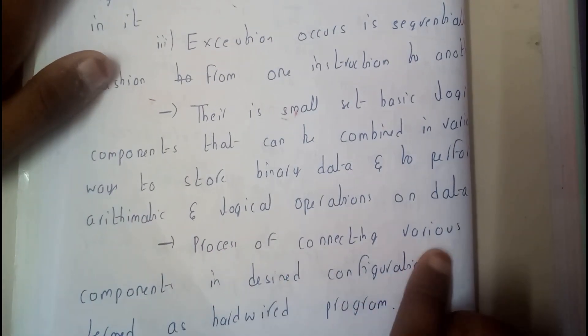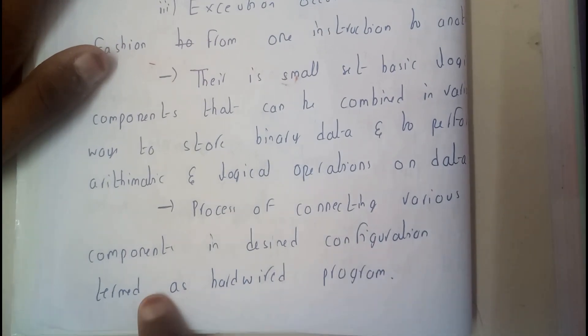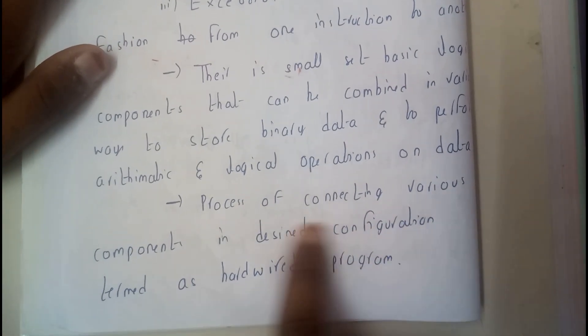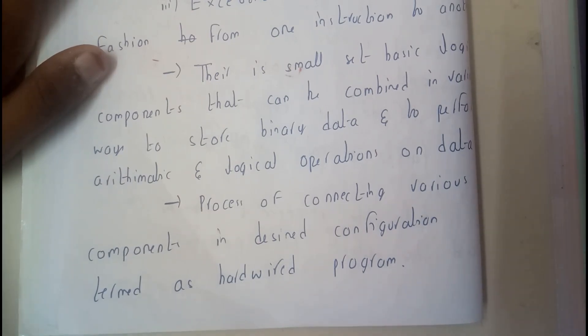The process of connecting various components in designed configuration is termed as hardwired programming. So we will be connecting CPU, the keyboard, the mouse. We are connecting them manually according to our desire or our design. So that method is what we call hardwired programming.